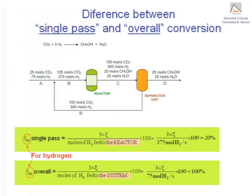To conclude, hydrogen's conversions — single-pass and overall — are the same as carbon dioxide's. Since both were supplied to the process in stoichiometric proportion, it is again not necessary to specify which component the two conversions refer to.